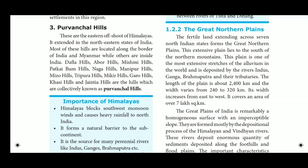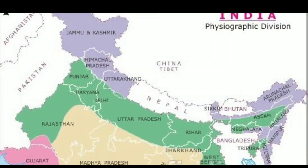We already discussed about the Northern Mountains. In this class, we are going to discuss about the Great Northern Plains. The Great Northern Plains is one of the fertile lands extending across 7 North Indian states. This extensive plain lies to the south of the Northern Mountains. This plain is one of the most extensive stretches of alluvium in the world, deposited by the rivers Indus, Ganga, Brahmaputra and their tributaries.